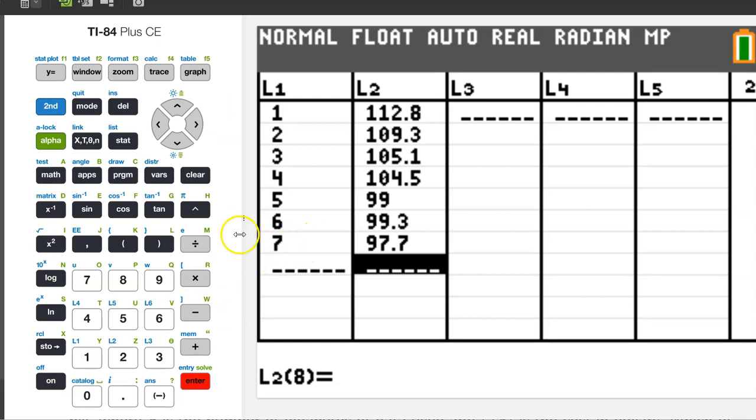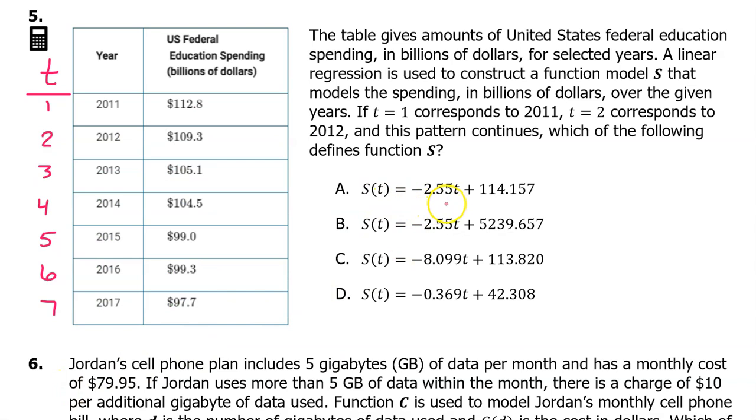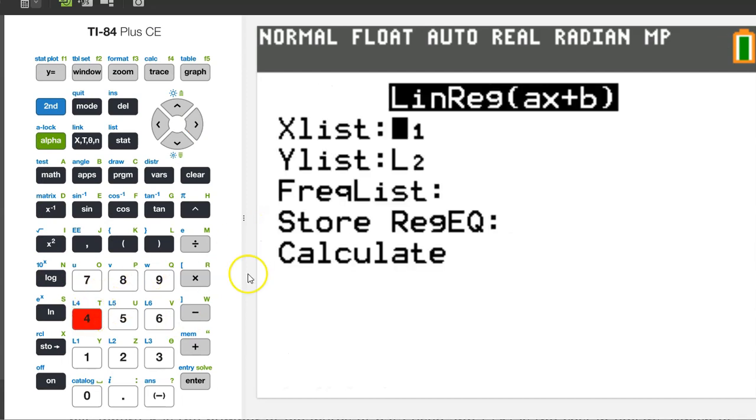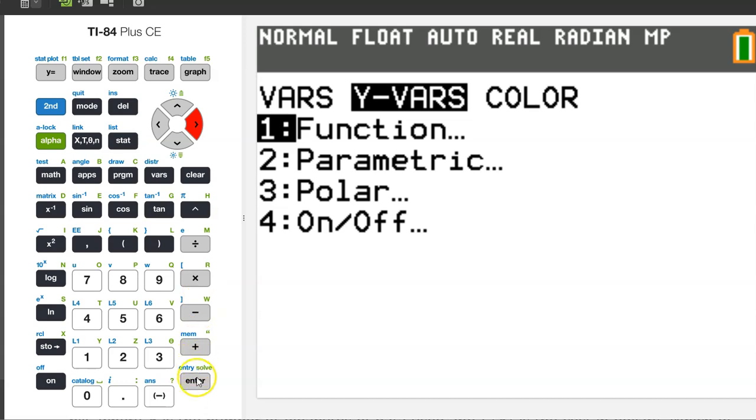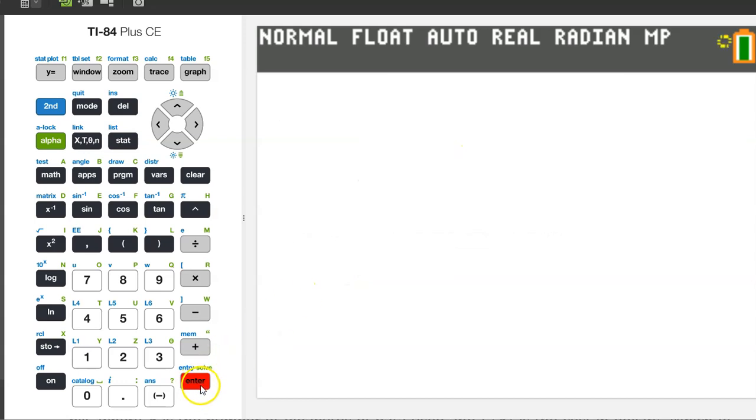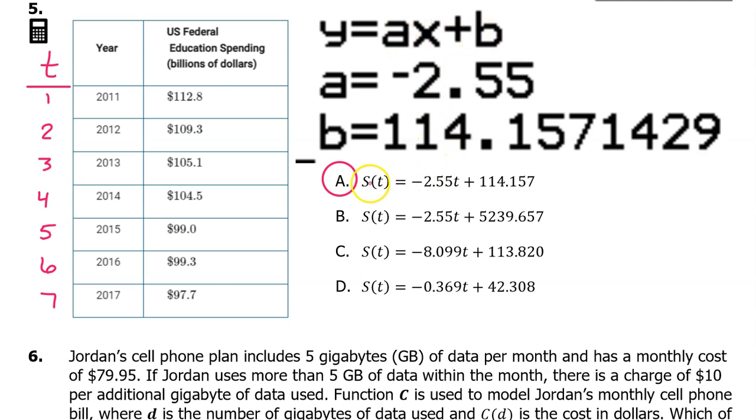We can find the linear regression model by hitting the stat button and switching over to the calculate menu, and choosing one of these linear regression models. All of the answer choices are in the form AX plus B. So, I am going to choose option 4. Before we hit enter and generate the regression model, slide down to where it says store regression equation, and type in Y1 to have the calculator automatically store the regression model as Y1 in the Y equals area. So hit vars, Yvars, enter, and enter again. Now hit enter twice to generate the model. Okay, so this is our answer. Plugging in the values for A and B, we can see that the answer is A.